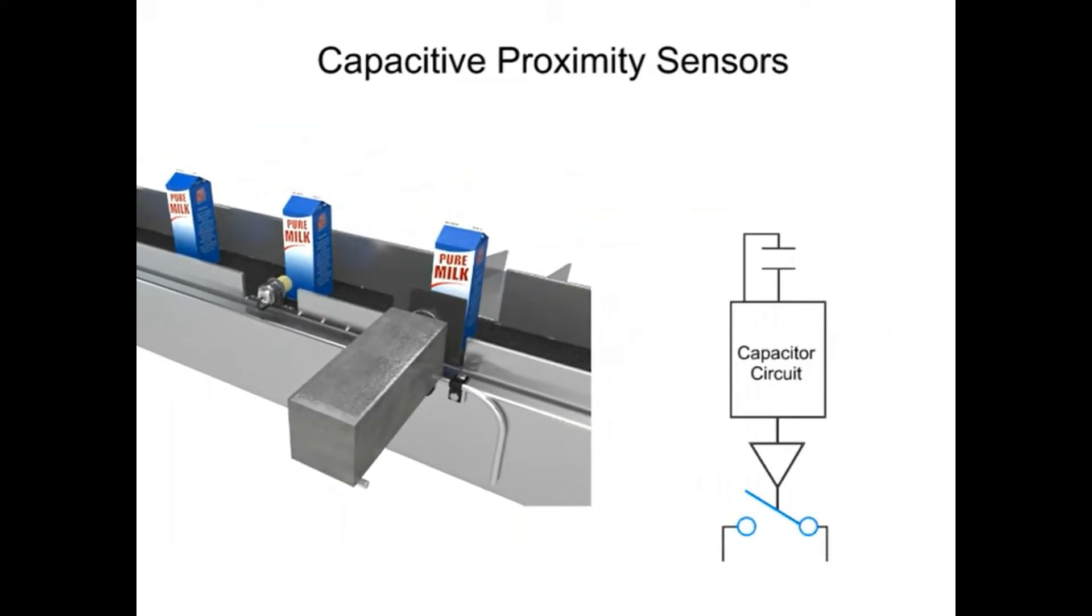Two small plates located in the front of the sensor form a capacitor. As a target enters the sensor's range, the capacitance of the two plates increases, thus causing a change in the oscillator frequency, which also activates the sensor's output, either normally open or normally closed, respectively.